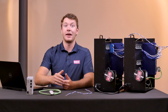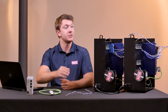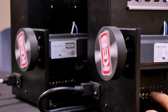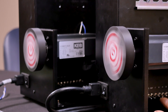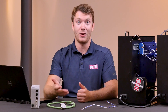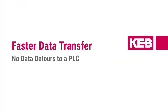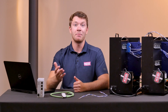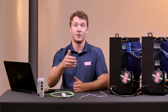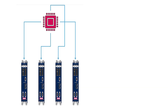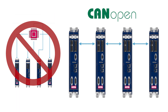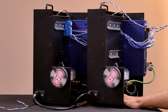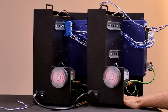What CAN open cross-communication does is allow one of the KEB drives to act as a master in the system, decreasing reliance on the PLC to manage network traffic. Not having the PLC allows for faster data transfer, because messages aren't required to take the data detour of going to the PLC and then back to the drives. Data can go directly between them, which increases the speed of the system and also increases the shaft performance of the drives.